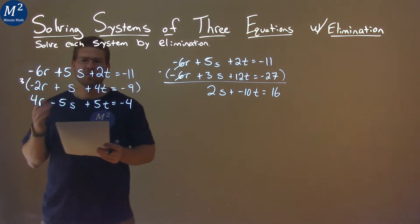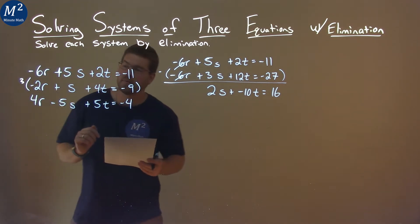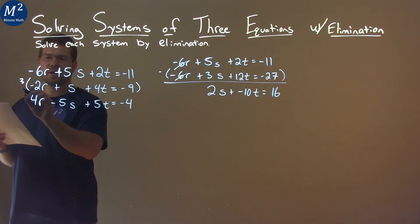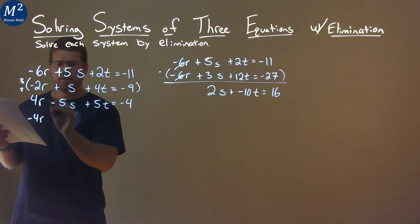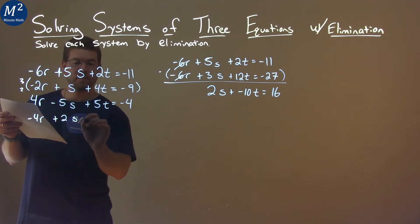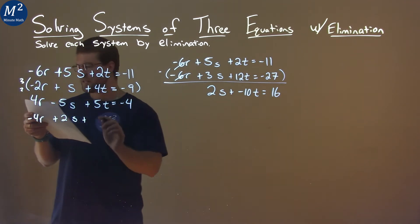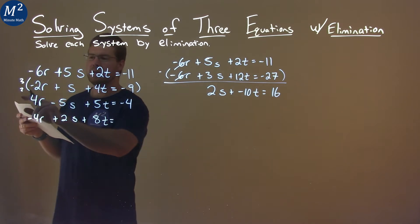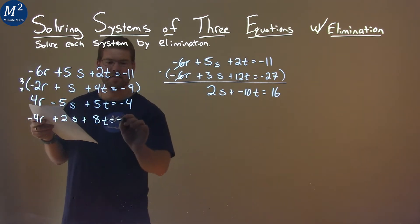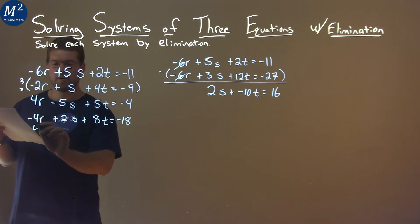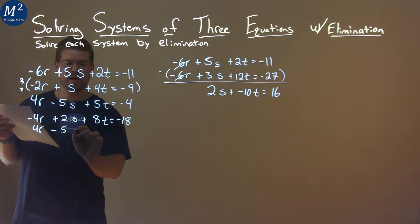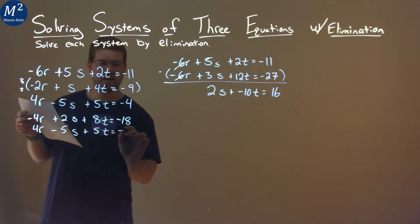Now I'm going to try to eliminate another variable. The second equation is going to be useful again. If we multiply the second equation by 2, what do we get? We have negative 4r here, plus 2s, plus 2 times 4t is 8t, and don't forget 2 times negative 9, negative 18. Bring down the third equation here: 4r minus 5s plus 5t equals negative 4.